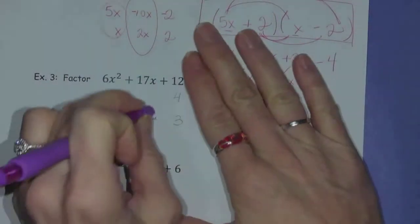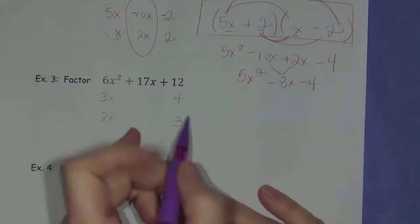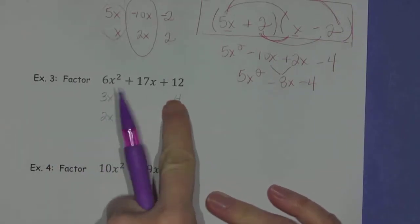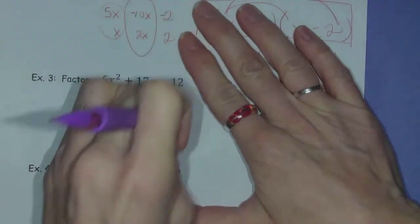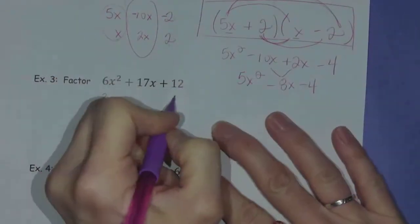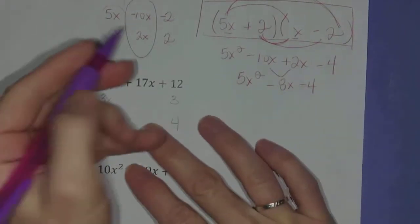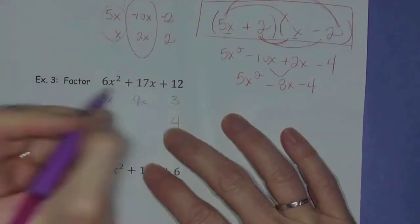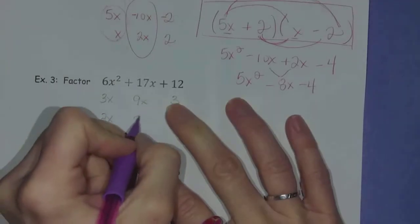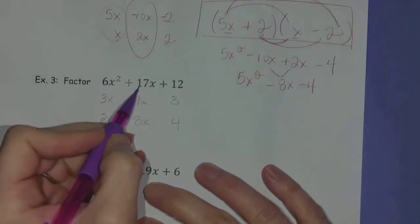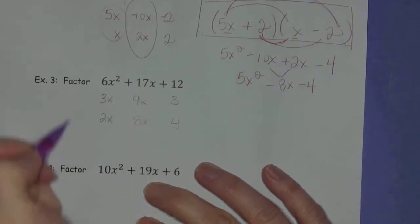Oh boy. Oh wait, something just struck me here. What if I switch these two? What if I put the 3 here? Let me make the 3 on top and the 4 on the bottom. Let me do a 3 and a 4. Okay, 3 times 3x is 9x. 4 times 2x is 8x. 8x plus 9x is 17x. Ta-da! We found the magic.